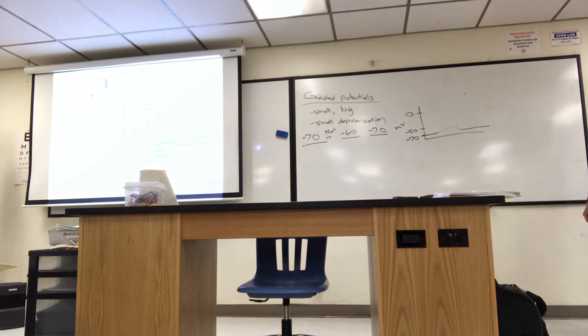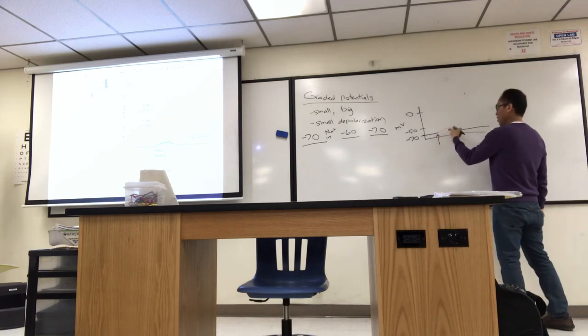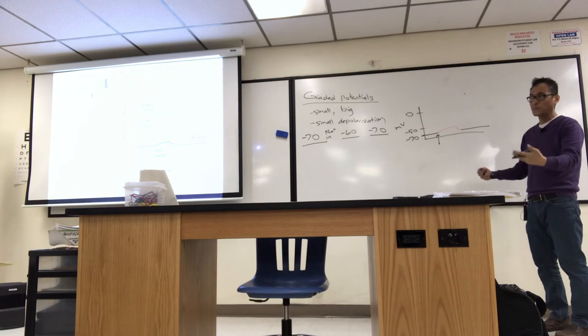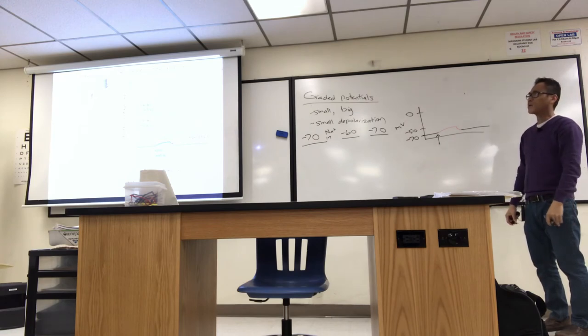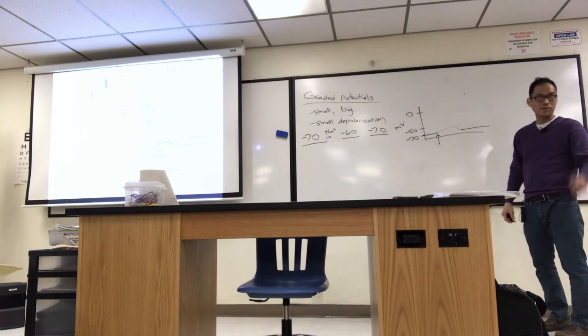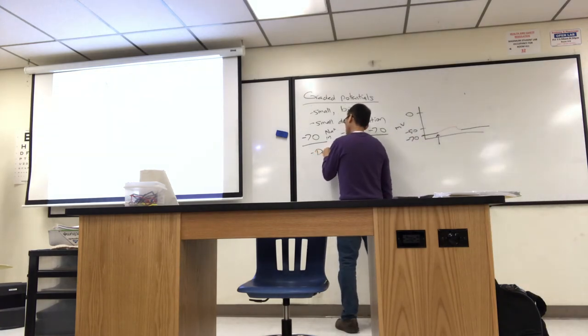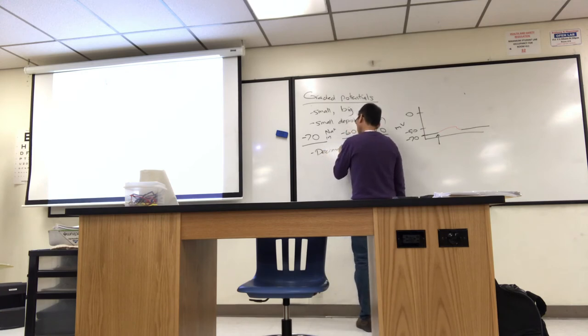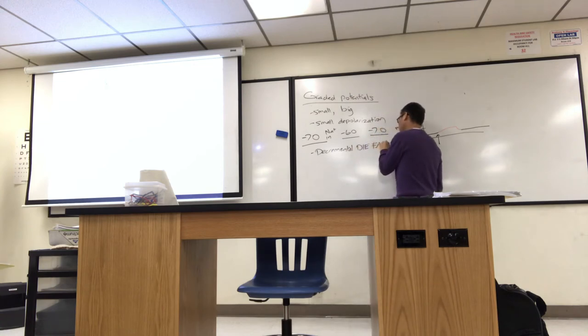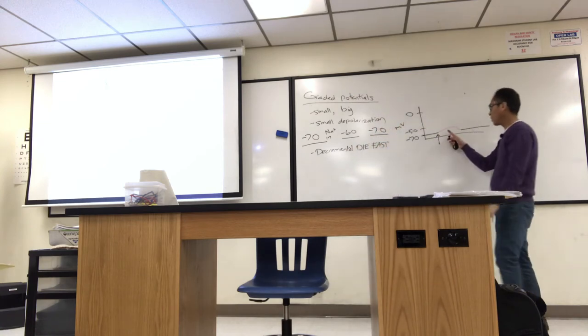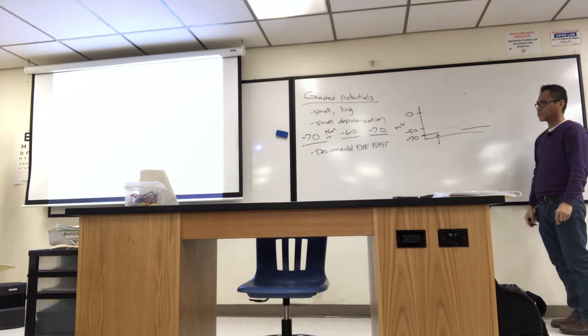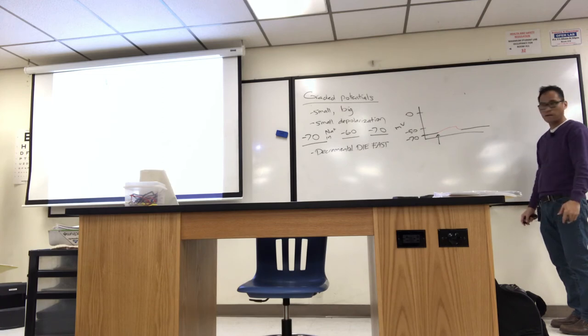But that's a graded depolarization. The other thing we learned is you zap a cell right here, you don't reach threshold, eventually it goes away. So what's the word they use? They're decremental. That's the word they use. Decremental. They die fast. You may get a little bit of a blip for a little bit, but eventually it will return to rest real quick. You didn't zap it hard enough to cause the cell to fire.